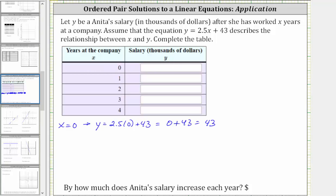When x is zero, y equals 43, which means the ordered pair zero comma 43 is a solution to the given equation.